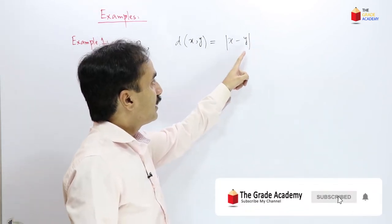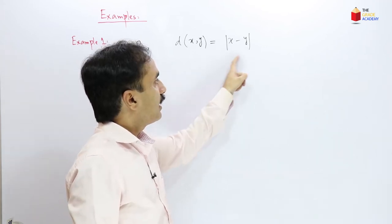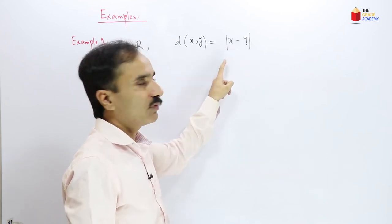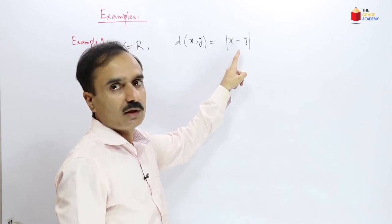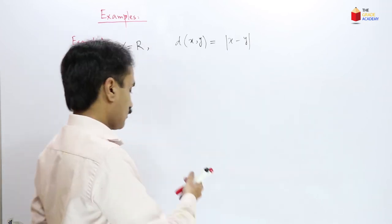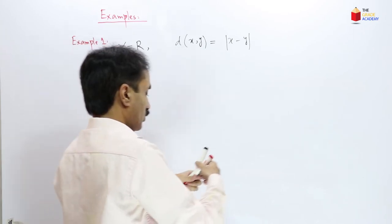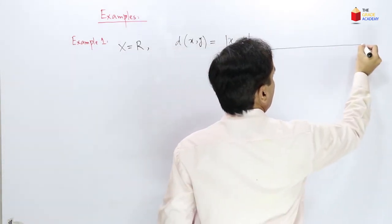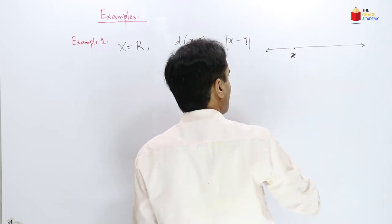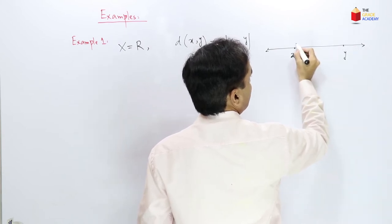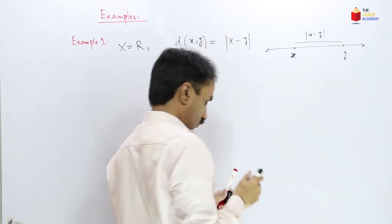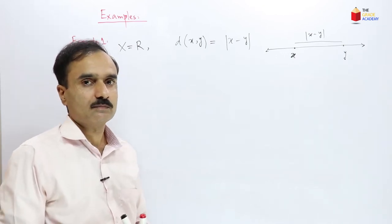Here |x − y| is a function which shows the distance between any two real numbers x and y on the real number line. If we have our number line, and this is point X and this is point Y, then this distance is given by |x − y|.